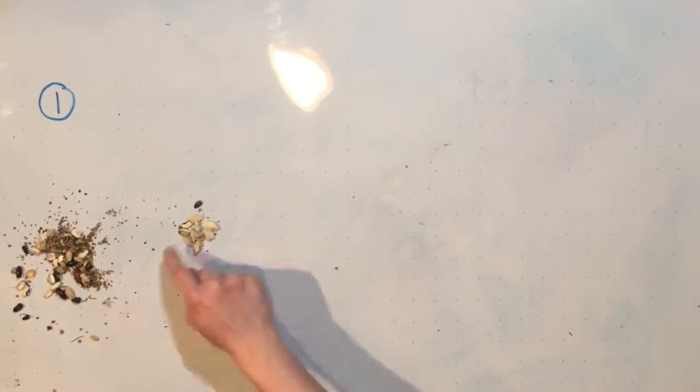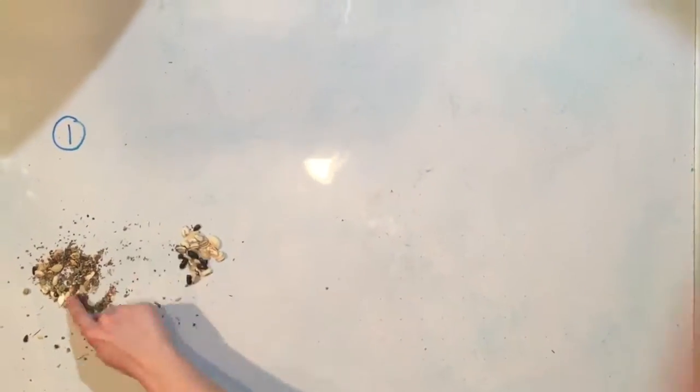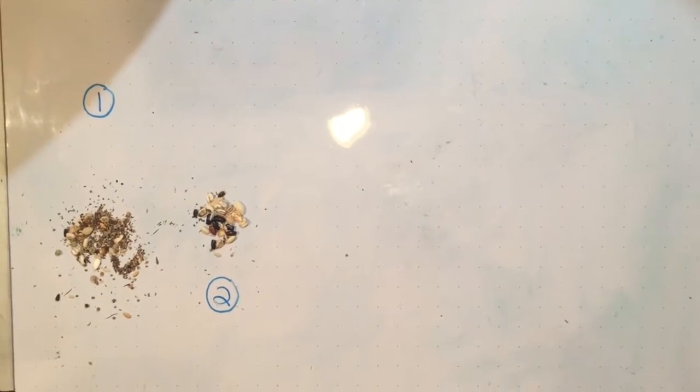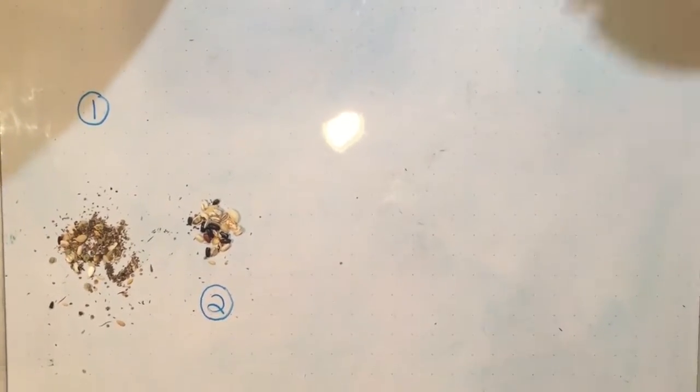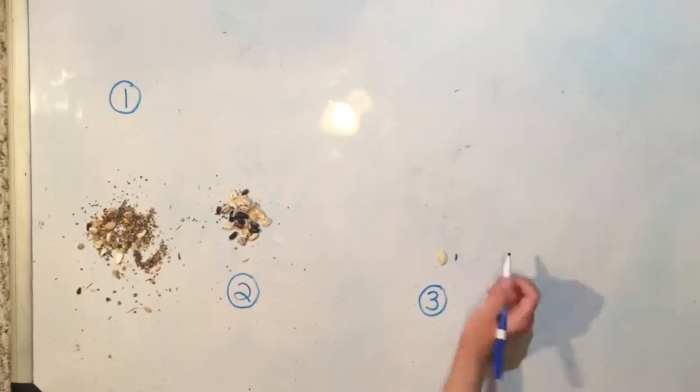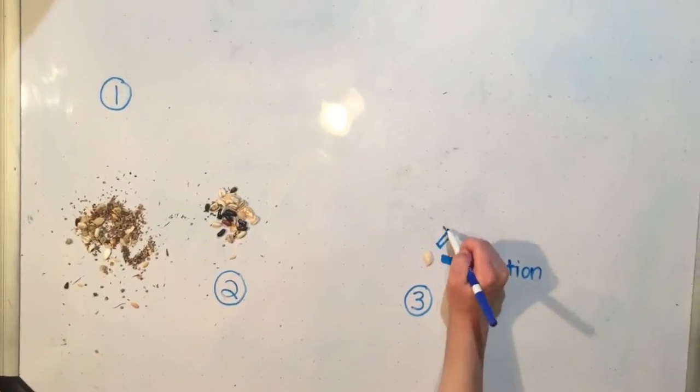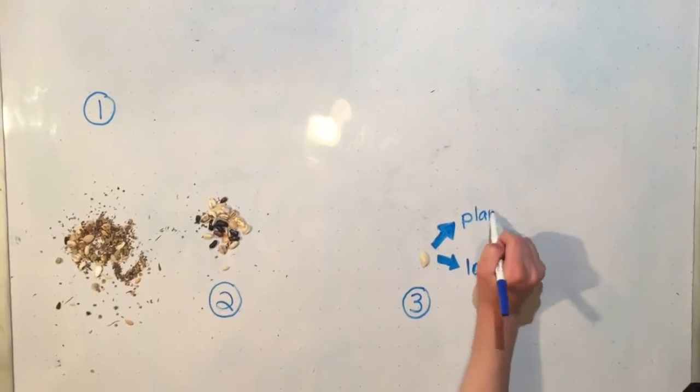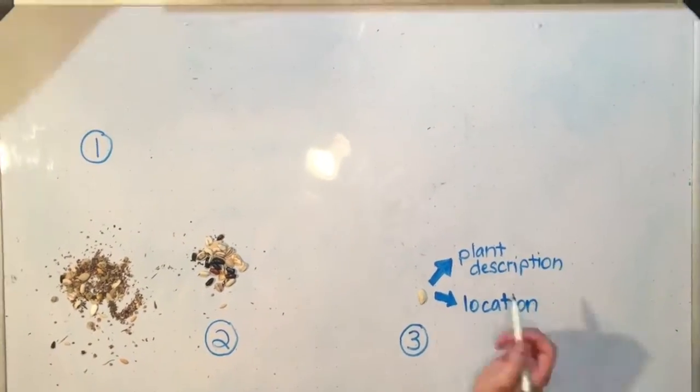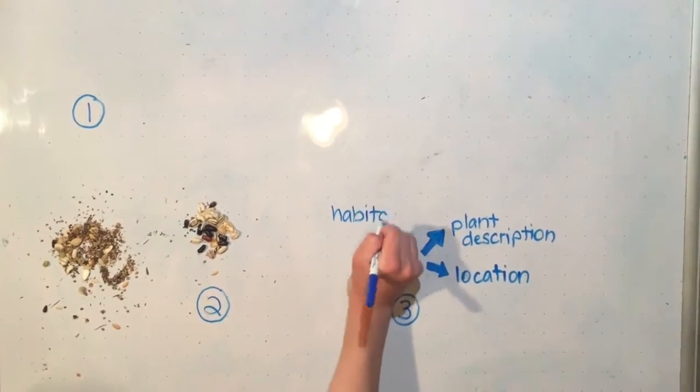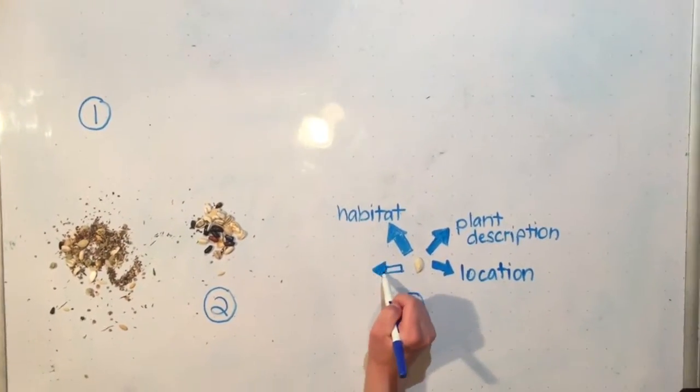Researchers first decide what seeds to collect, giving priority to threatened species. After locating the desired plants, seed collection takes place when the seeds are ripe. Many tools are used to extract these tiny seeds, for example, tweezers, pole cutters, seed traps, or nets and buckets, depending on the type of plant. For each seed collection, researchers record the location, plant description, habitat, soil type, and any other important information.